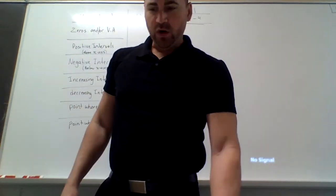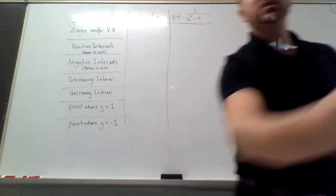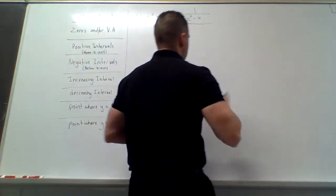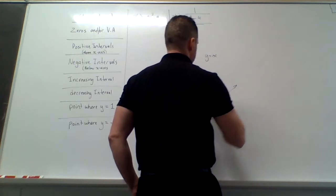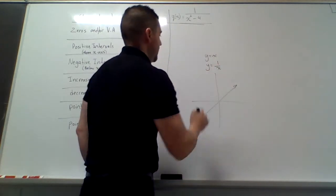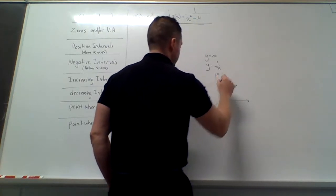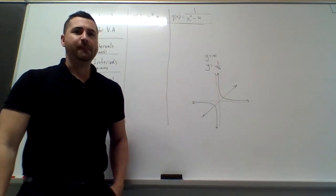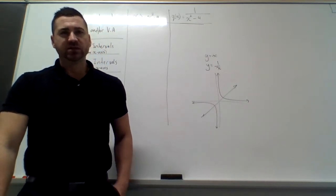We're working on 5.1 — graphs of reciprocal functions. We've done regular reciprocal functions before. For instance, if we did linear y equals x, the reciprocal of y equals x is y equals 1 over x. So what we're doing today is kind of an investigation. We're going to look at parent functions and reciprocal functions and see what characteristics they have in common.